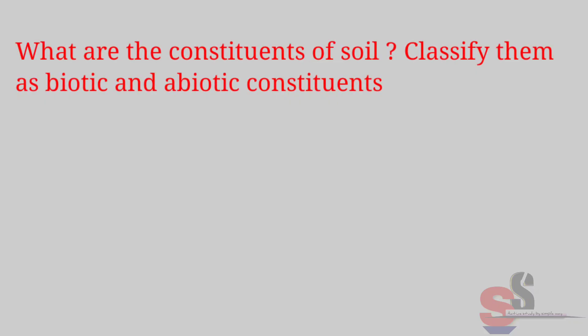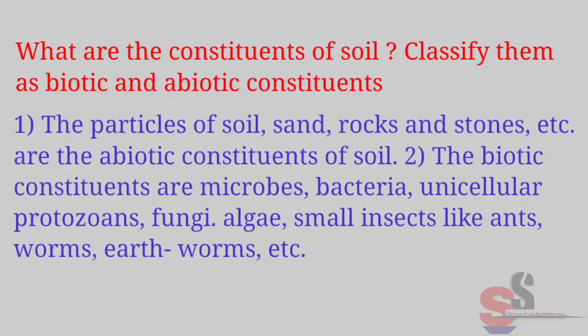Use your brain power. What are the constituents of soil? Classify them as biotic and abiotic constituents. Answer: The particles of soil, sand, rocks and stones etc. are the abiotic constituents of soil. The biotic constituents are microbes, bacteria, unicellular protozoans, fungi, algae, small insects like ants, worms, earthworms etc.